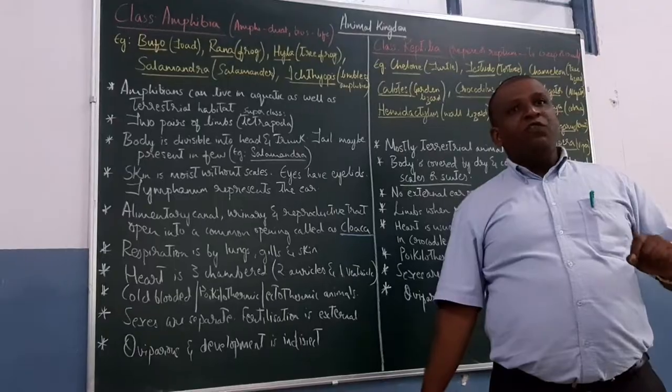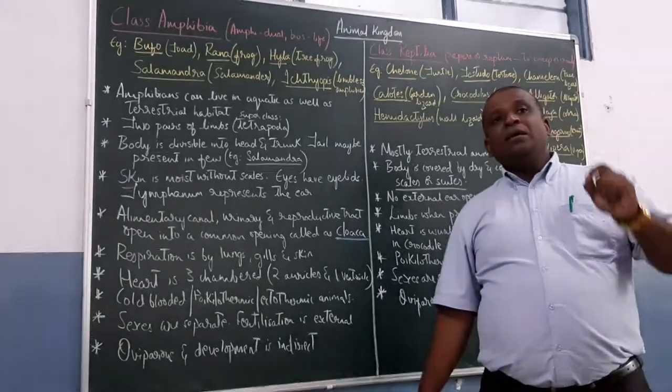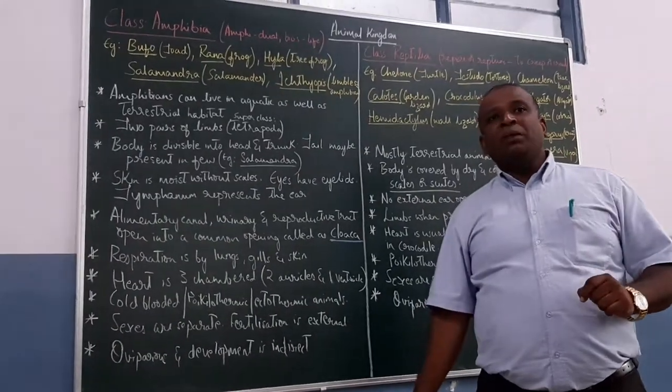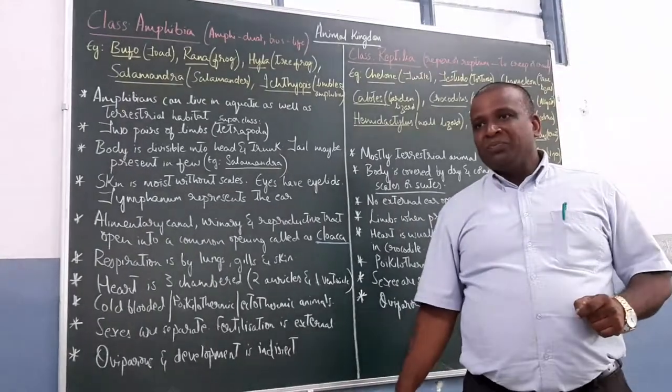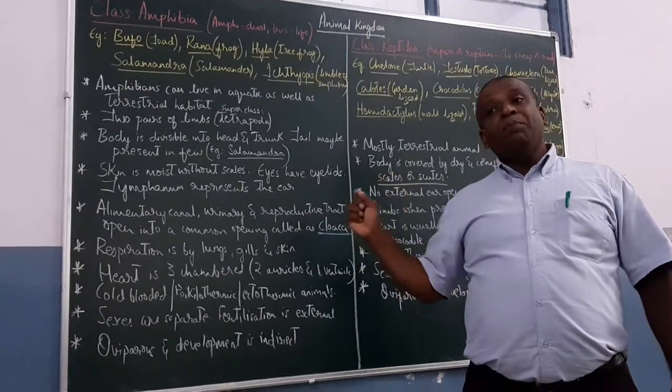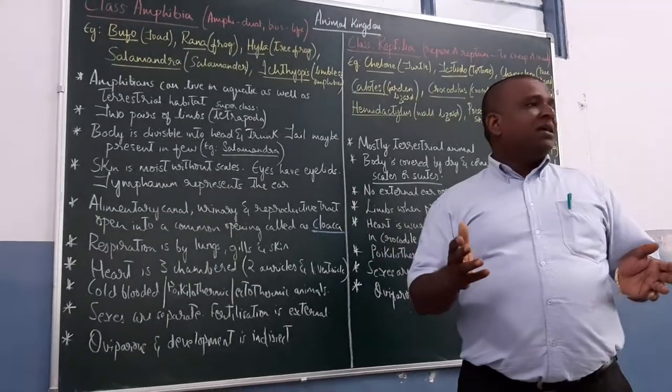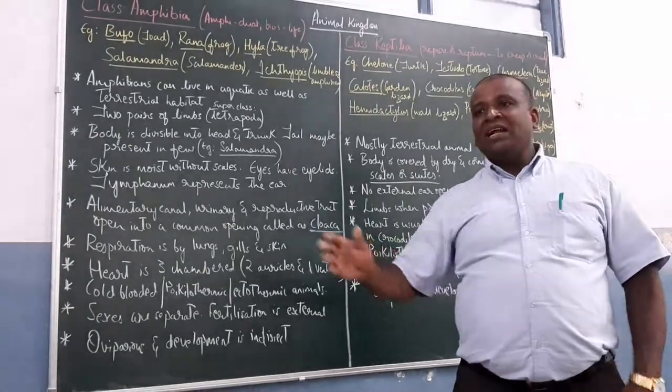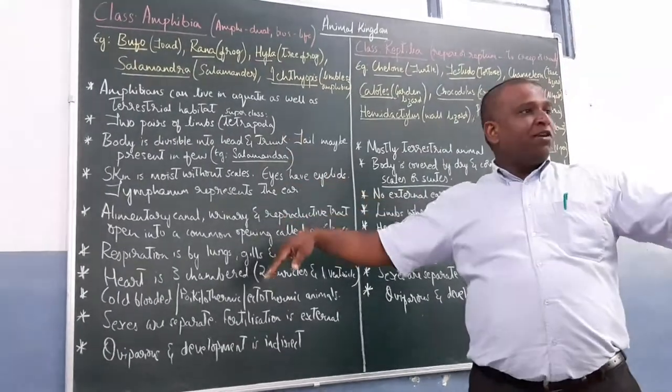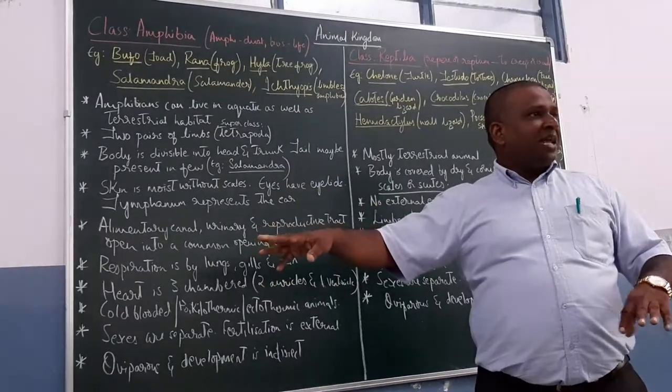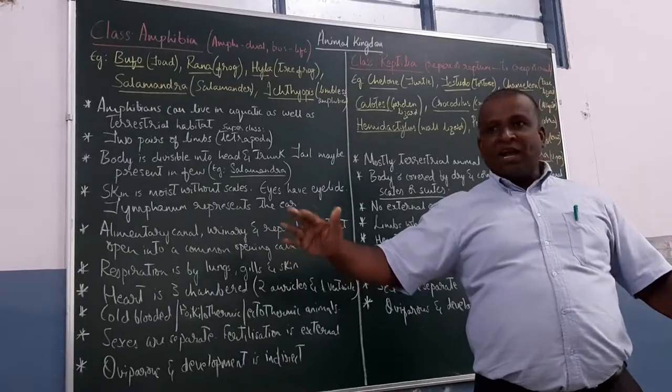But when we are calling them as amphibians, the major criteria that you should remember is they require water to complete their life cycle. Without water, they cannot complete their life cycle. That is the reason we call it as amphibians. It is not that they live on land as well as water.